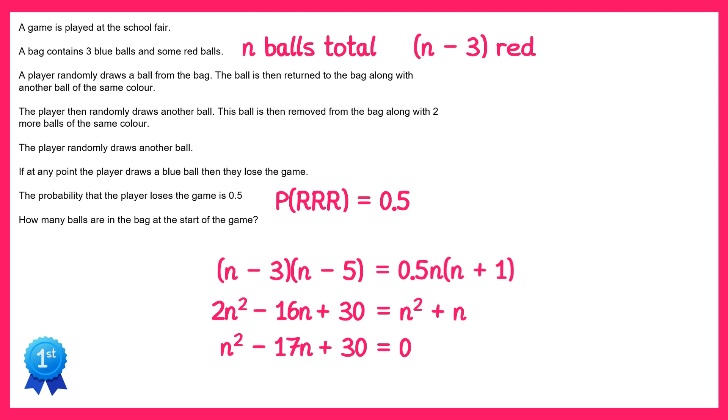This is a quadratic expression that factorises, it's n take away 15, n take away 2 equals 0, which gives you 2 solutions for n. n is 15, and n is 2.